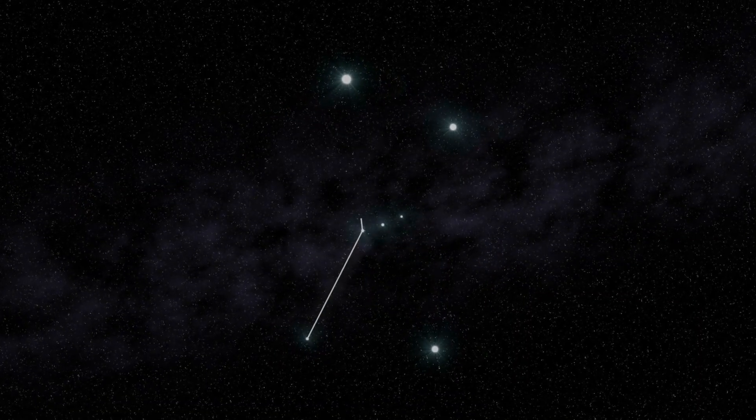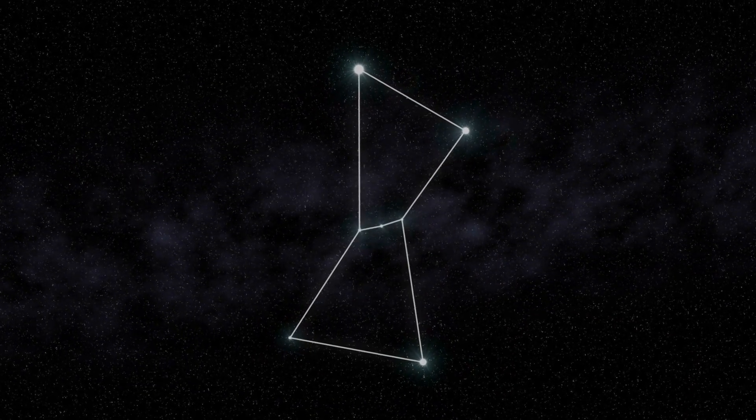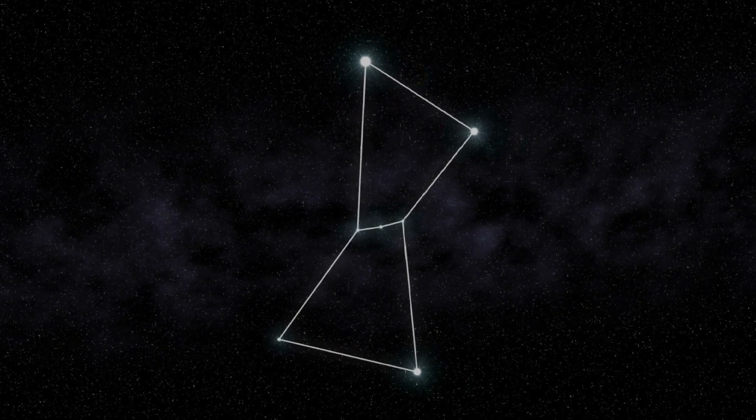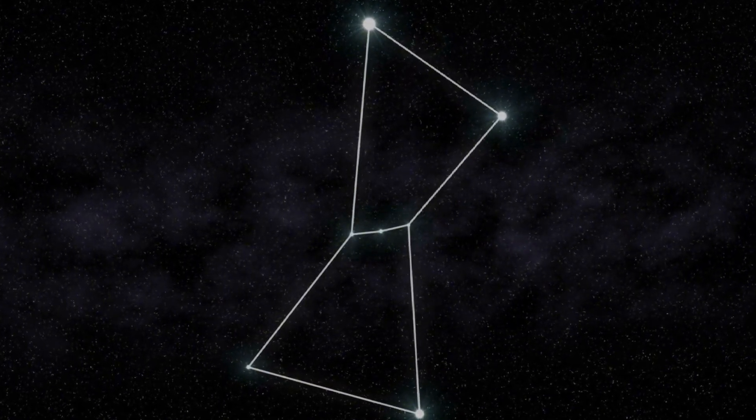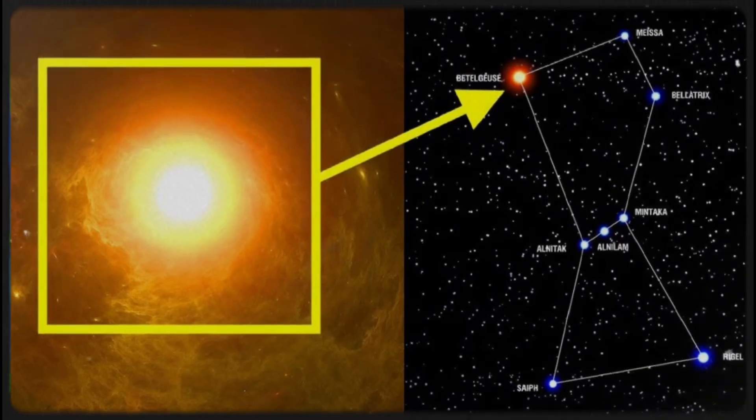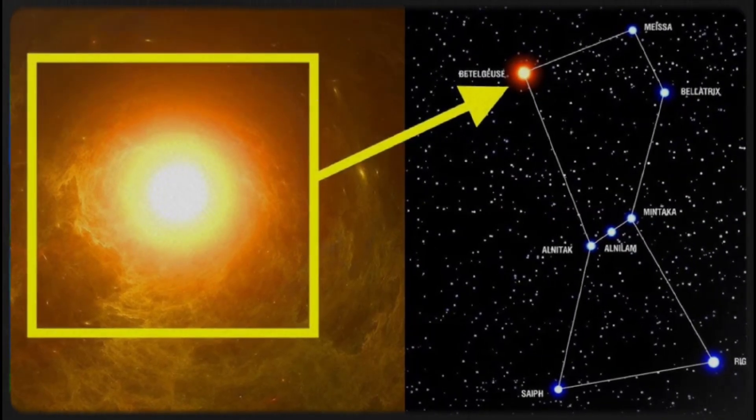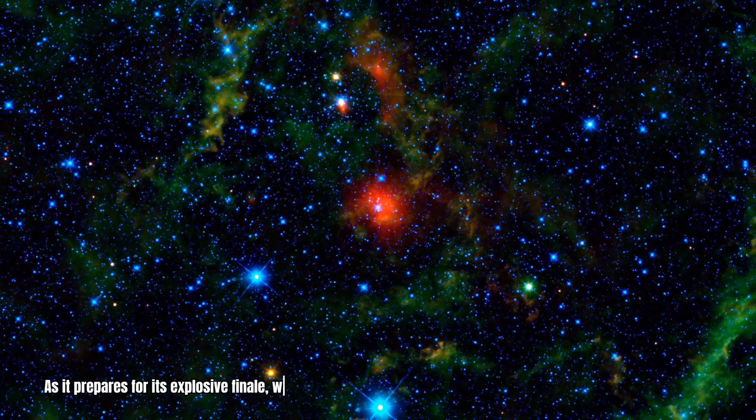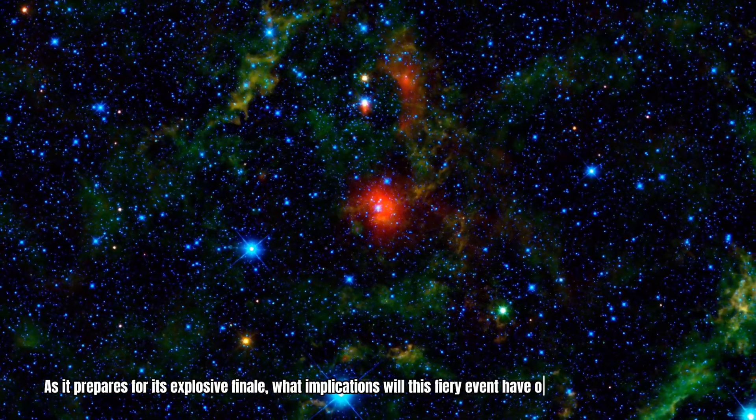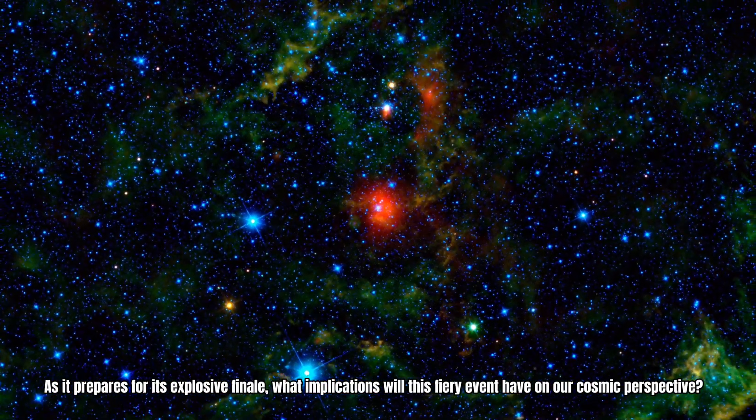Located 642 light years away in the Orion constellation, Betelgeuse is far from ordinary. If it were our sun, its immense size would reach as far as Mars. The light we currently see from it is over six centuries old, originating during the medieval era. As it prepares for its explosive finale, what implications will this fiery event have on our cosmic perspective?